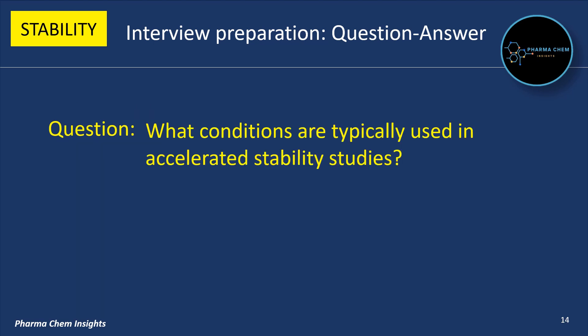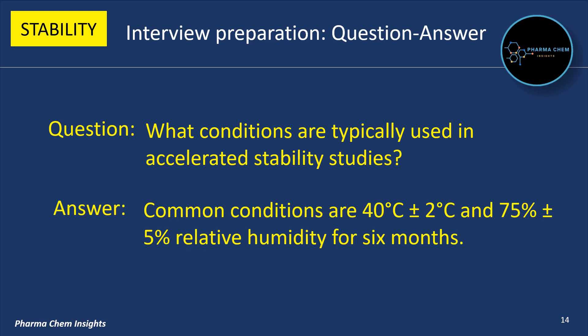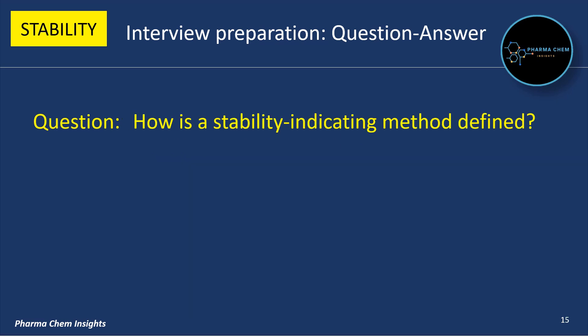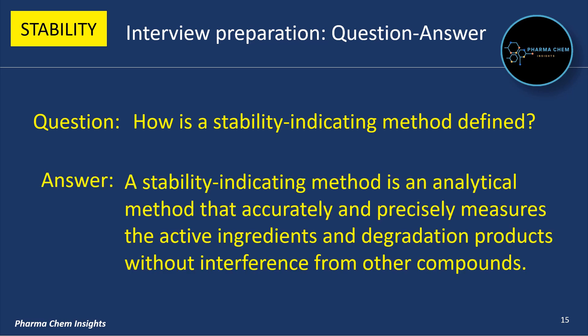Next question: Which conditions are typically used in accelerated stability studies? Common conditions are 40°C ±2°C and 75% ±5% relative humidity for 6 months. A stability-indicating method is an analytical method that accurately and precisely measures the active ingredients and degradation products without interference from other compounds.